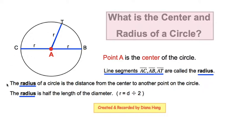The radius of a circle is the distance from the center to any point on the circle. So if I start at center A and I extend all the way to point B, that length is called the radius.